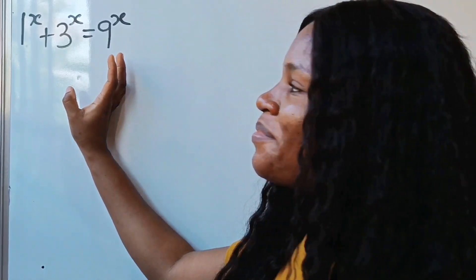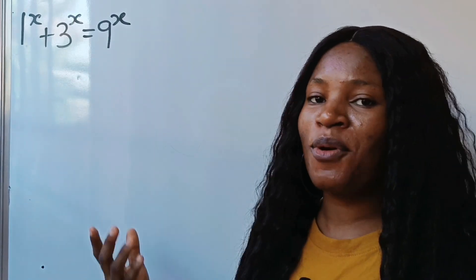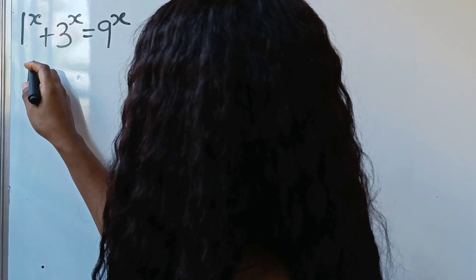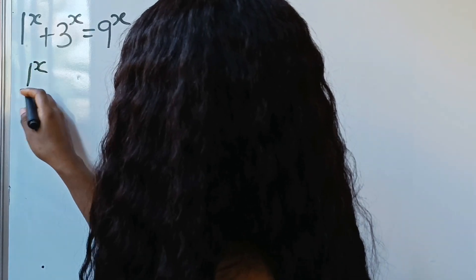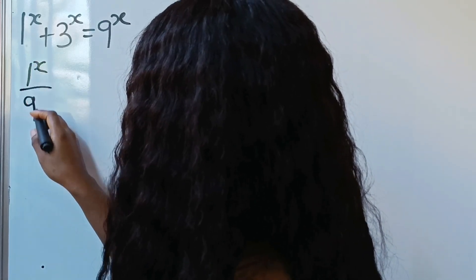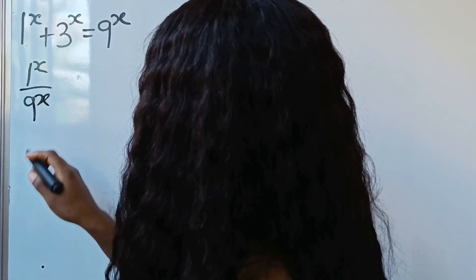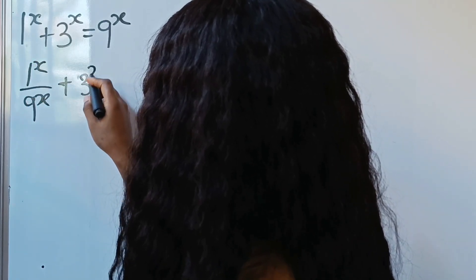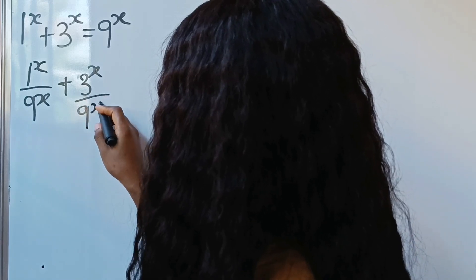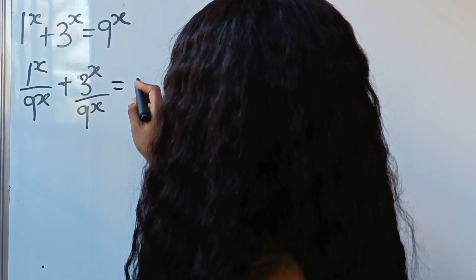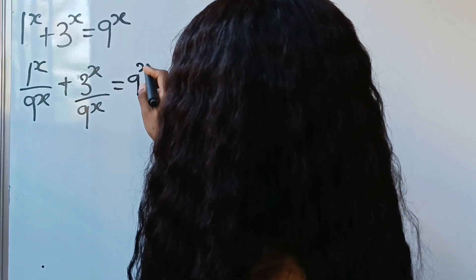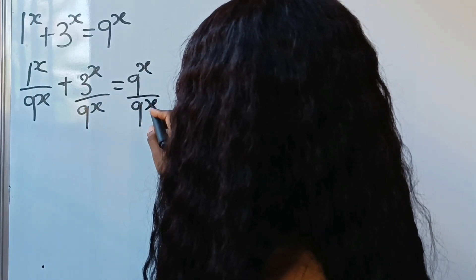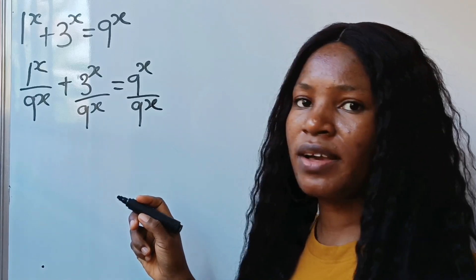Let's divide through by 9 to the power of x. So we have 1 to the power of x divided by 9 to the power of x, plus 3 to the power of x divided by 9 to the power of x, is equal to 9 to the power of x divided by 9 to the power of x.